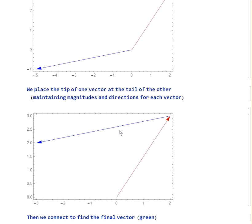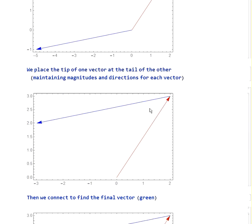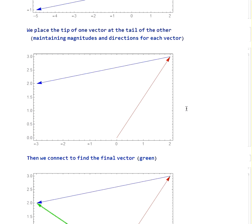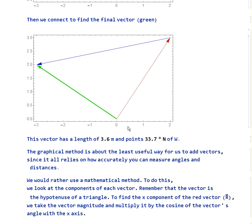So, one way to add these vectors is just to move this blue one, the tail of it, up to the tip of the red one. Now we've got this, and our resultant is formed by starting at the beginning of the red and going to the end of the blue. That means the green vector is our resultant.